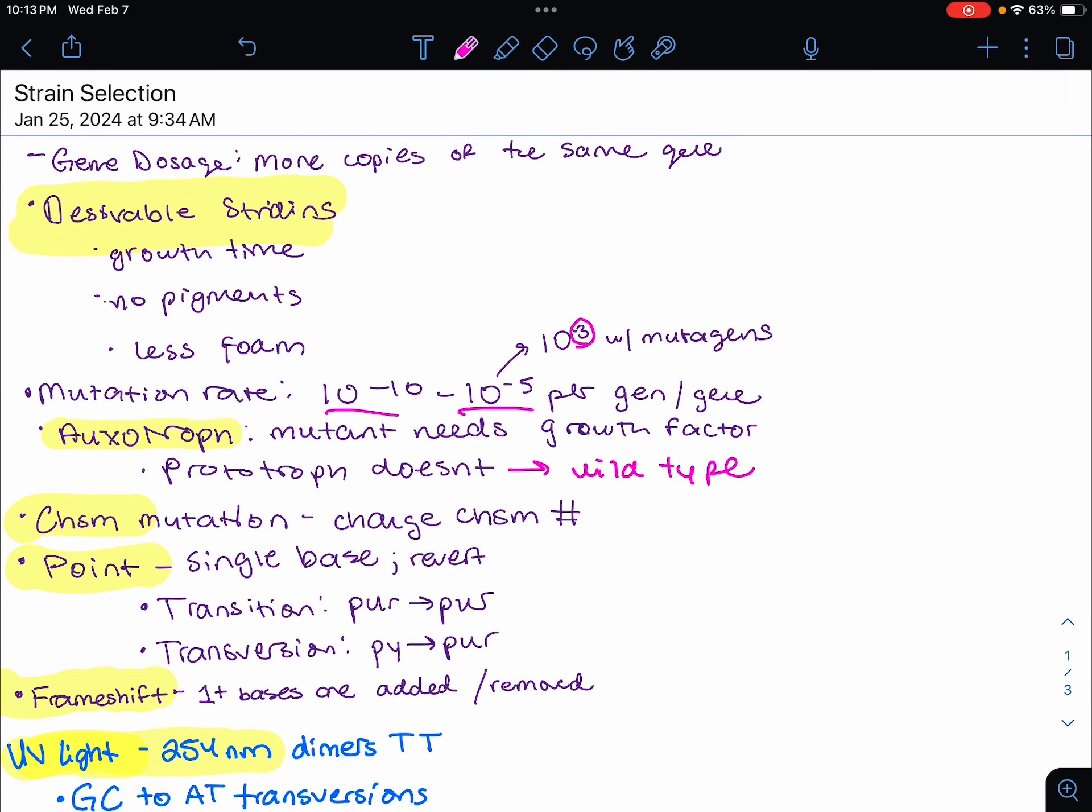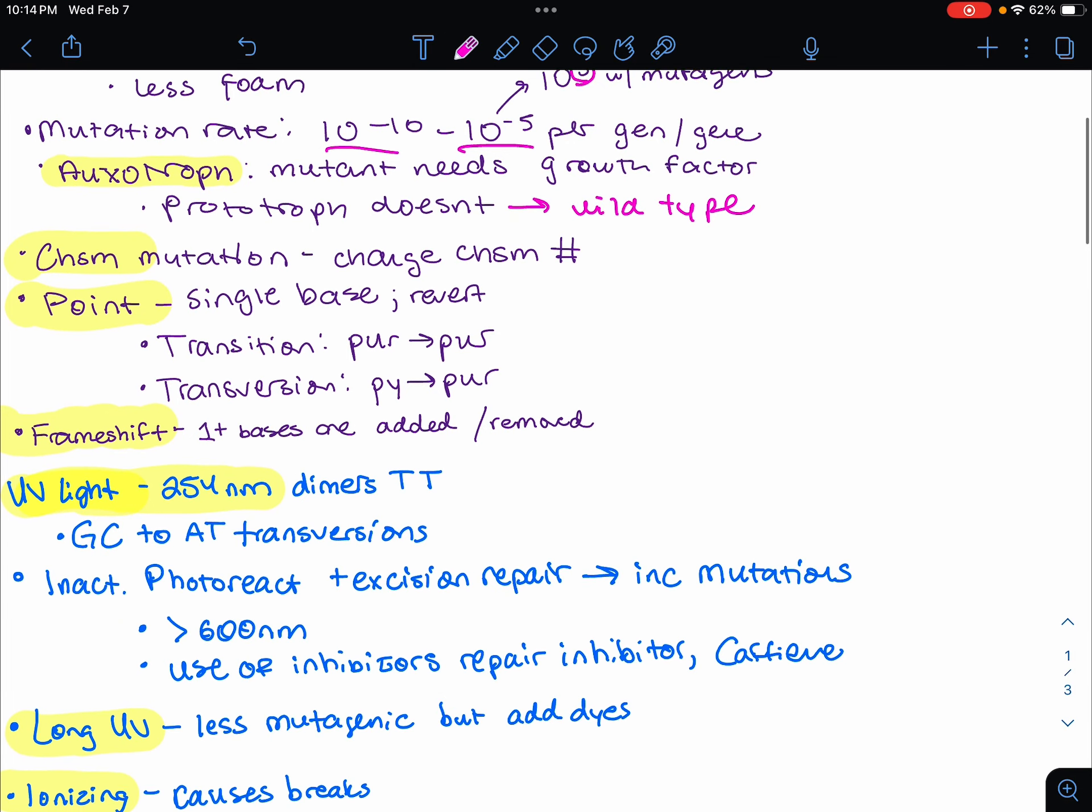Good evening everyone, this is going to be the next set of notes from the class I am in, and it's all about strain selection for the usage of microbes in commercial settings and research too. This involves the improvement of strains, trying to find the best strains that will give the highest amount of product, so you'll need to look at gene dosage. You're also going to need desirable strains that have shorter growth times, no pigments produced, and less foam in these settings.